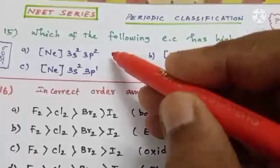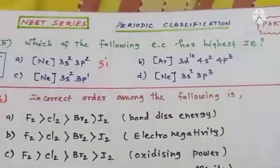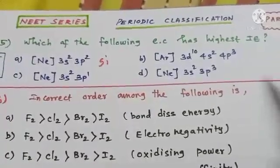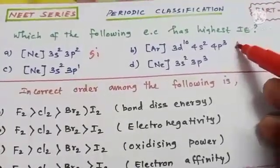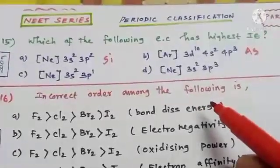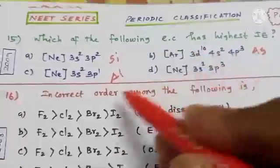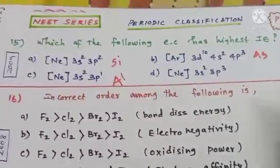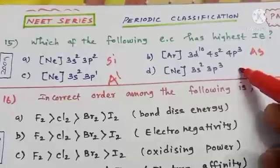Option B is [Ar] 3d¹⁰ 4s² 4p³, which is the 15th group element arsenic (As). Option C is [Ne] 3s² 3p¹, which is aluminum. Option D is [Ne] 3s² 3p³ with atomic number 15, which is phosphorus.